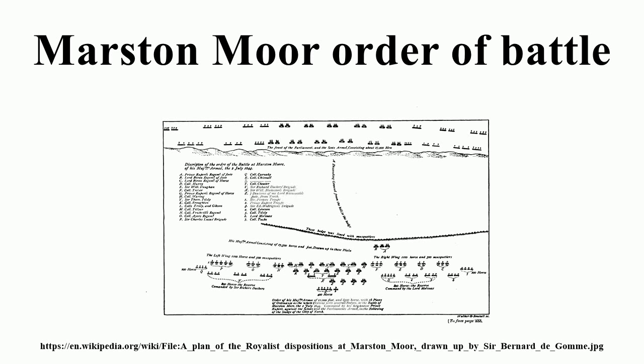Main Battle: The Earl of Loudoun's Brigade: The Tweeddale Regiment, Lord Borden's Regiment. The Earl of Cassilis's Brigade: The Kyle and Carrick Regiment, The Nithsdale and Annandale Regiment.